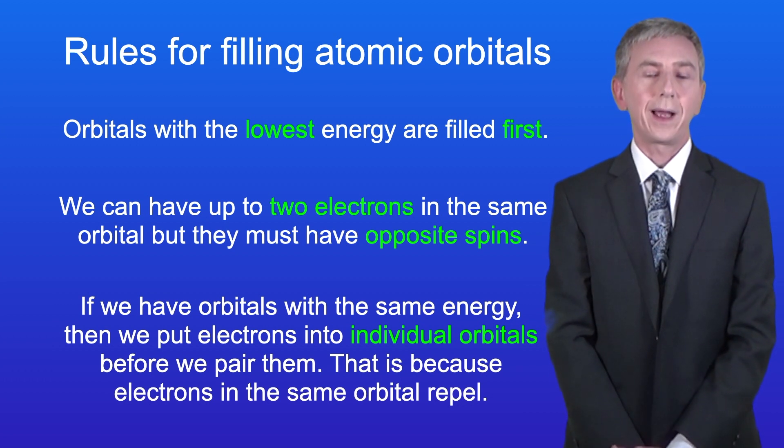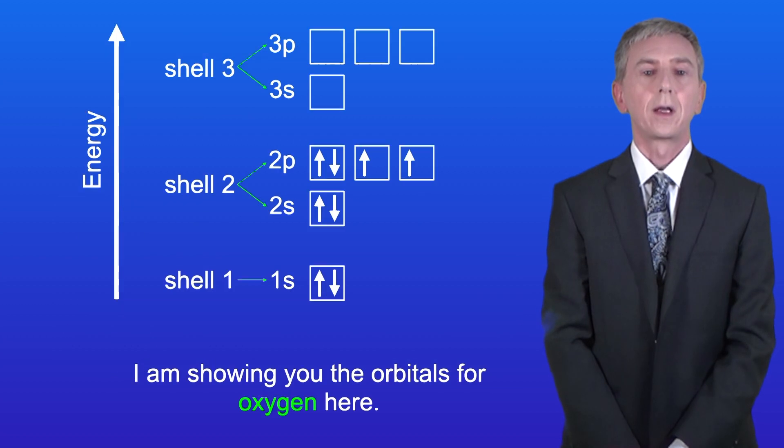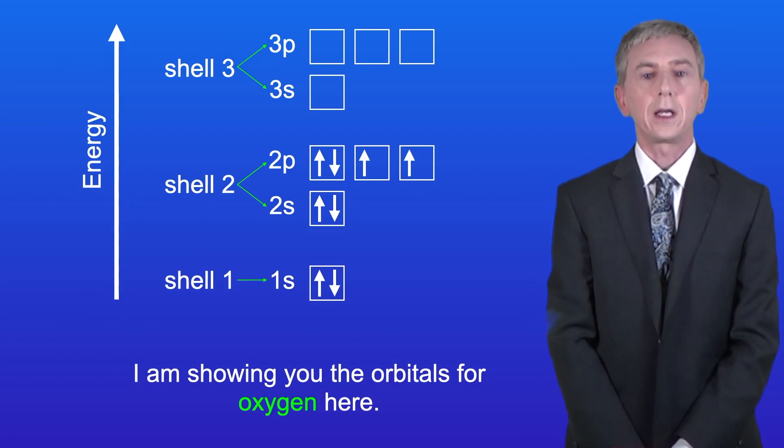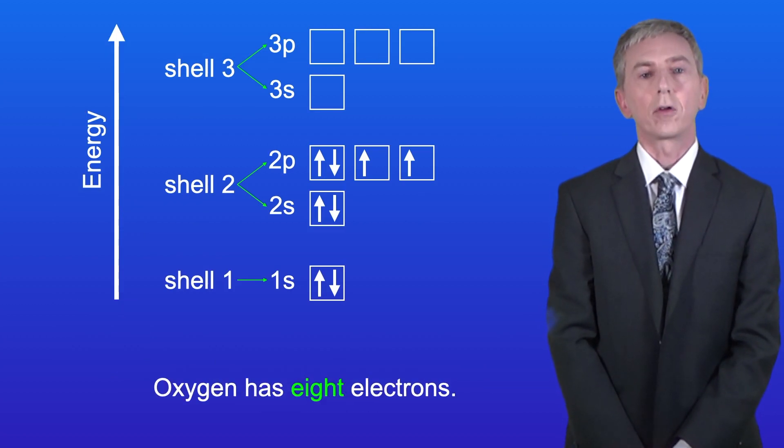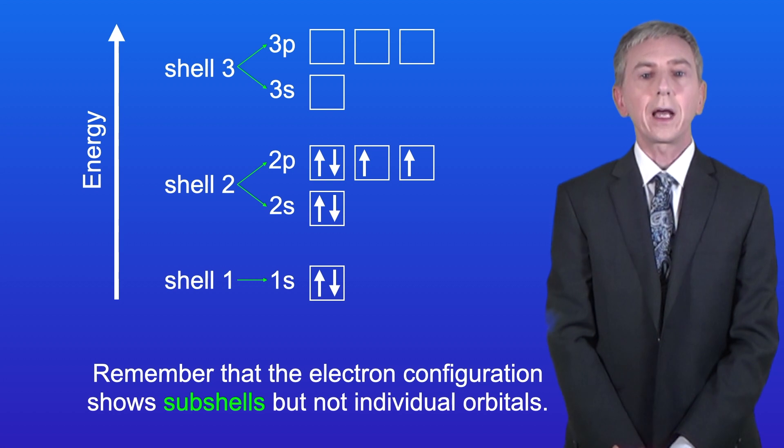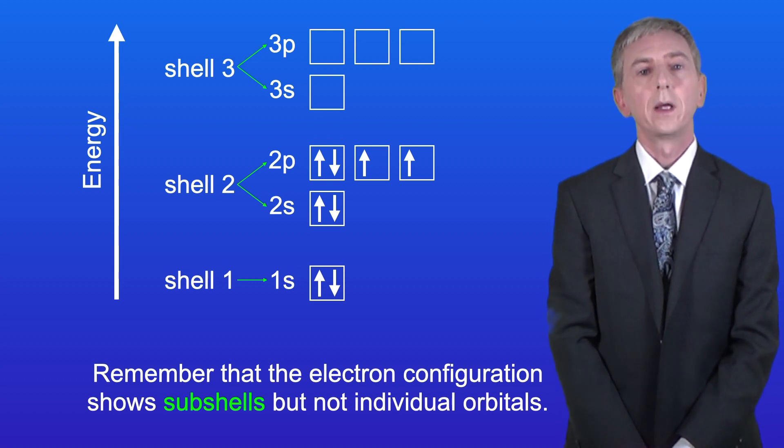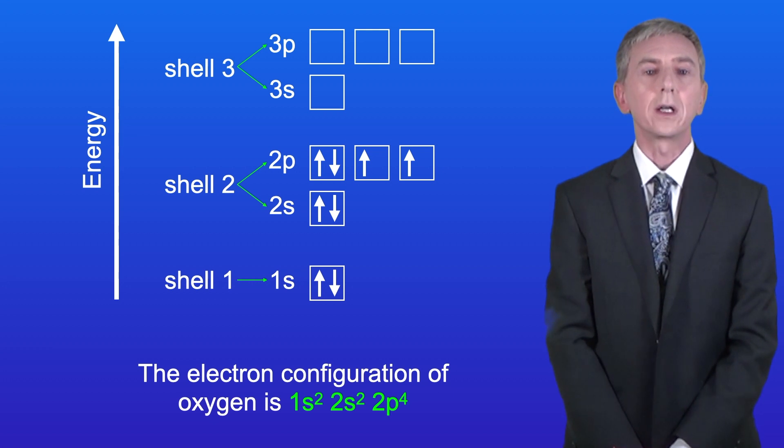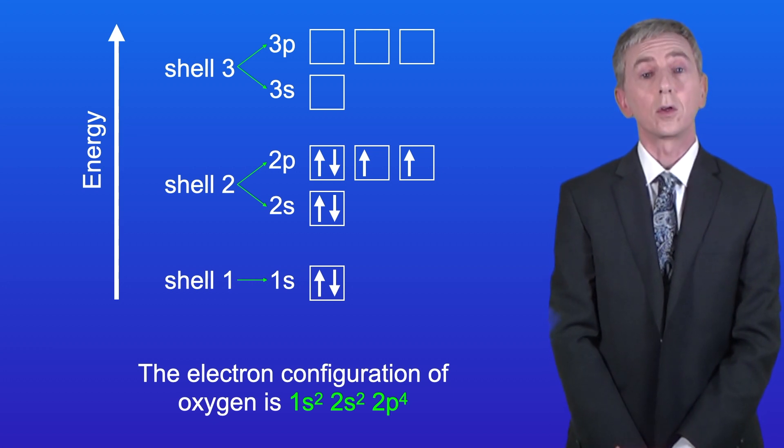And we saw how to apply these rules for different elements. I'm showing you the orbitals for oxygen here. Oxygen has eight electrons. We also saw that we can write the electron configuration for atoms. Remember that the electron configuration shows subshells but not individual orbitals. The electron configuration of oxygen is 1s2, 2s2, 2p4.